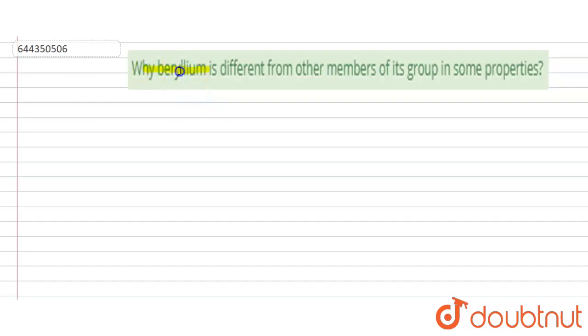Here the question is: why is beryllium different from the other members of its group in some properties? Why does it differ? We have to discuss the reason.